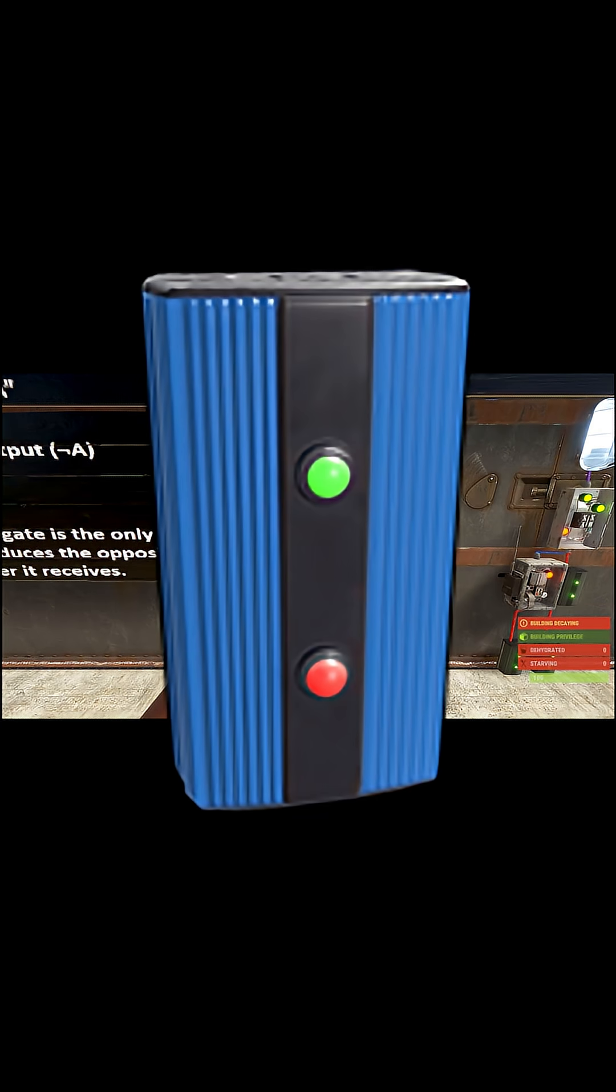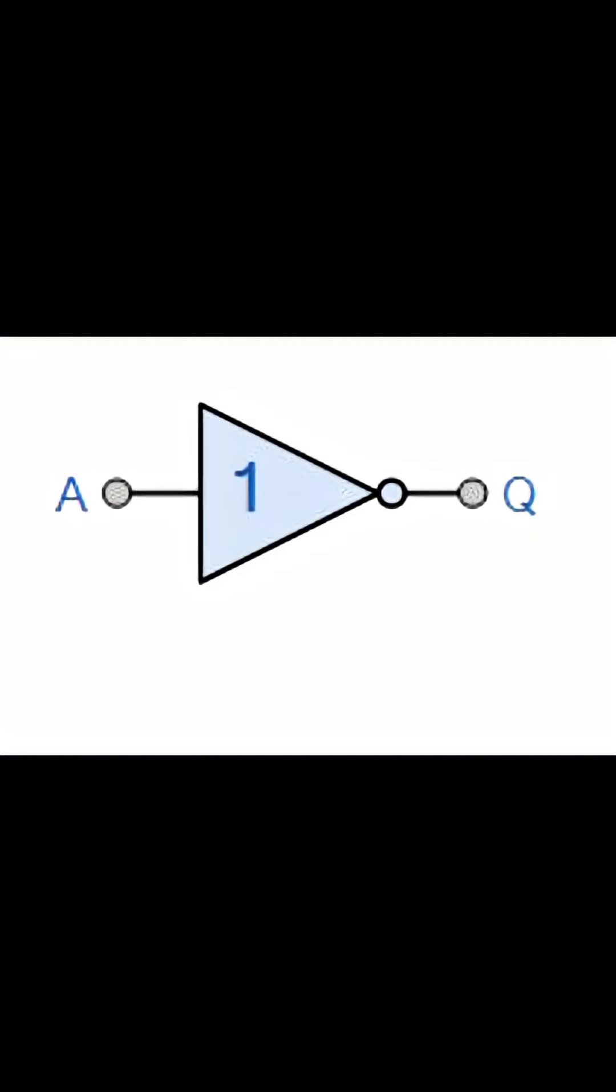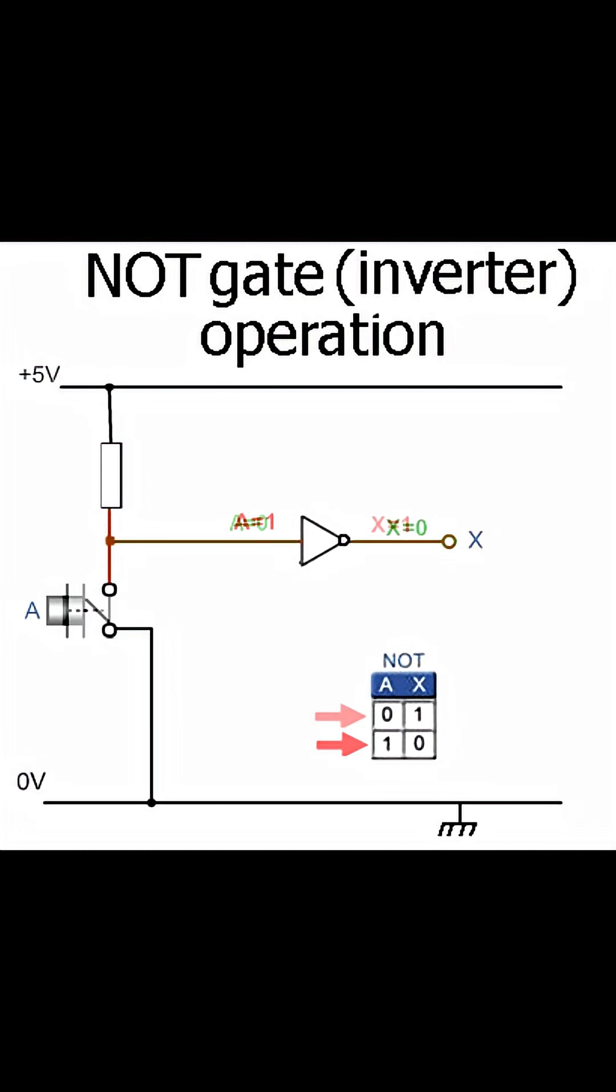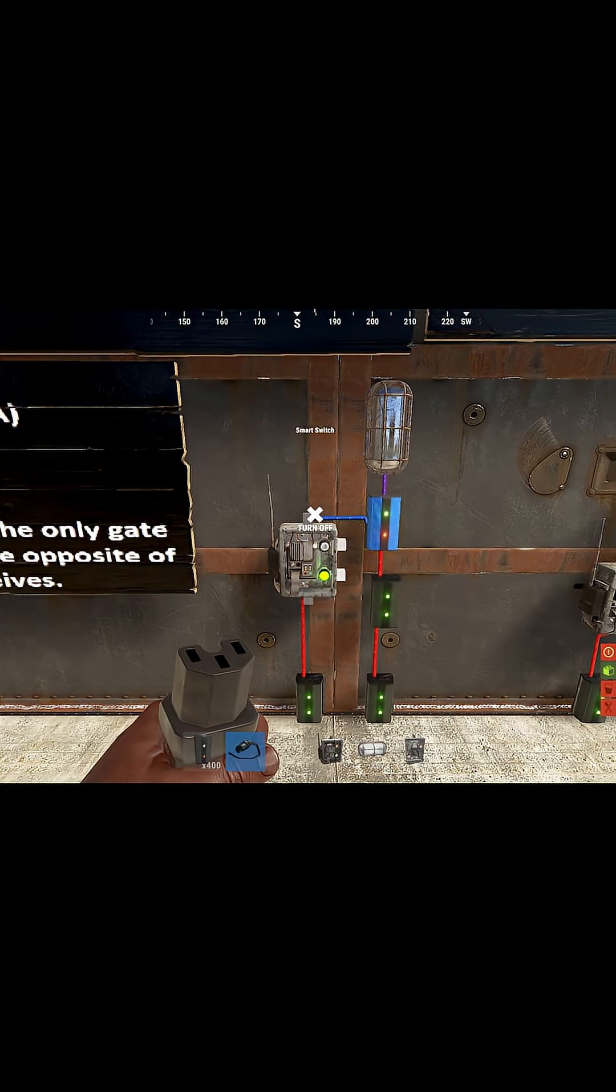The NOT gate. The NOT gate is the simplest yet most powerful logic element. Unlike AND and OR which check conditions, the NOT gate inverts them.